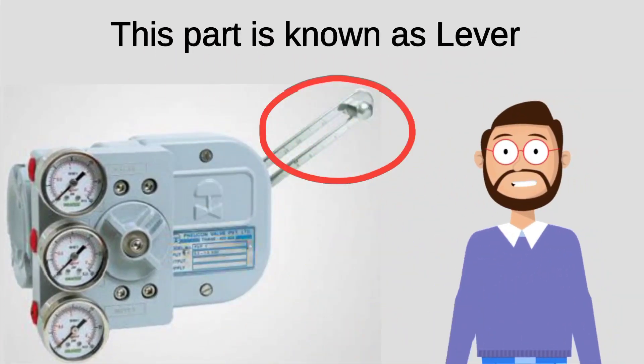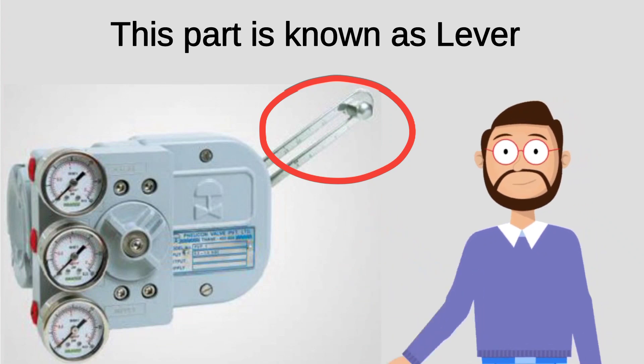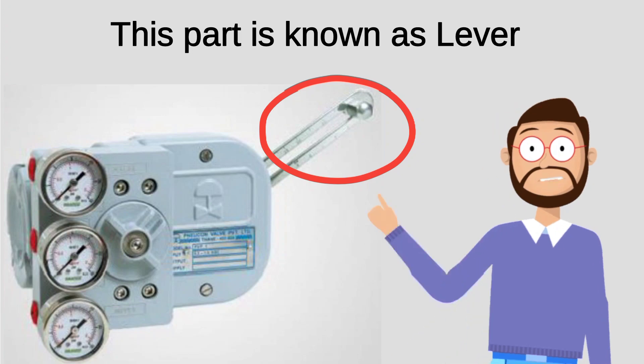So if you are asked: which part is used to connect the control valve to the positioner? The answer would be: lever.